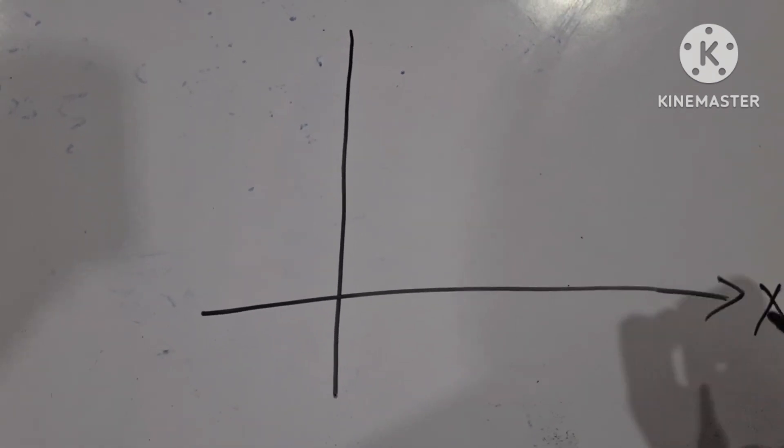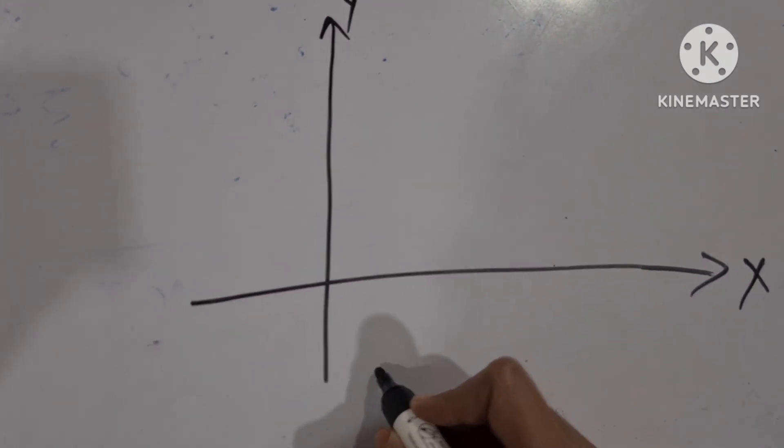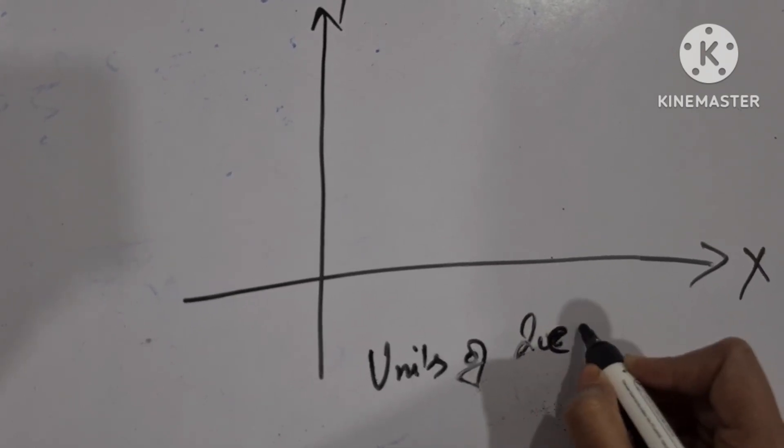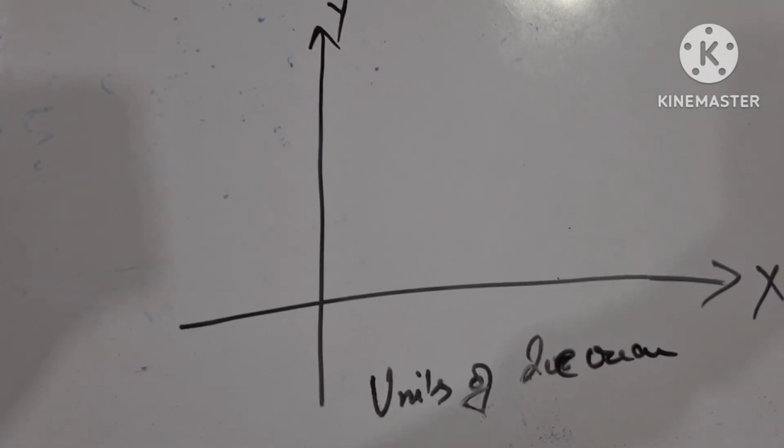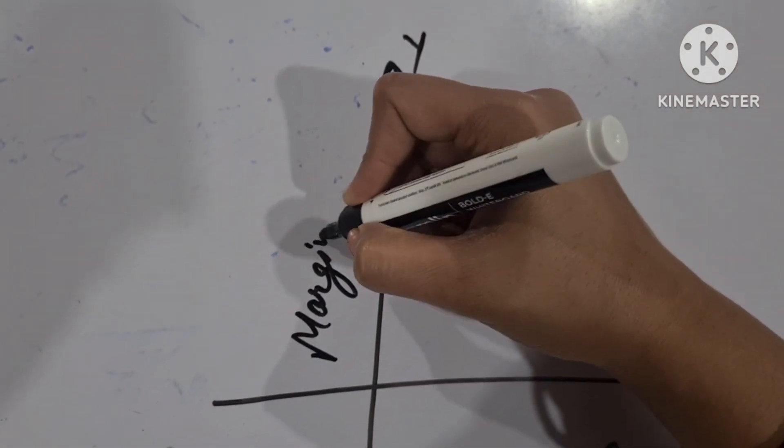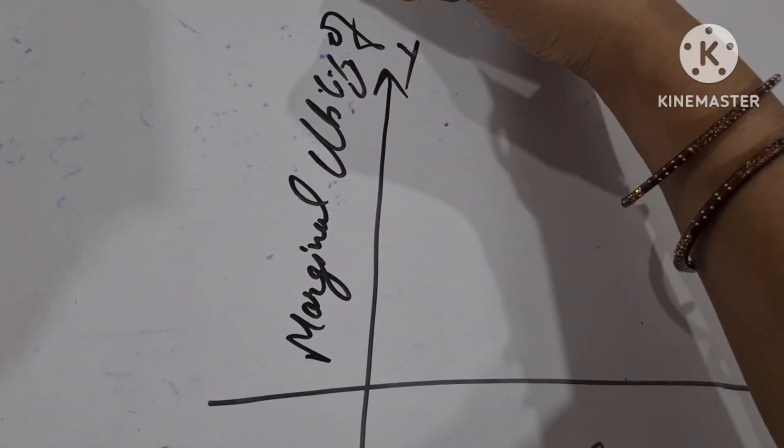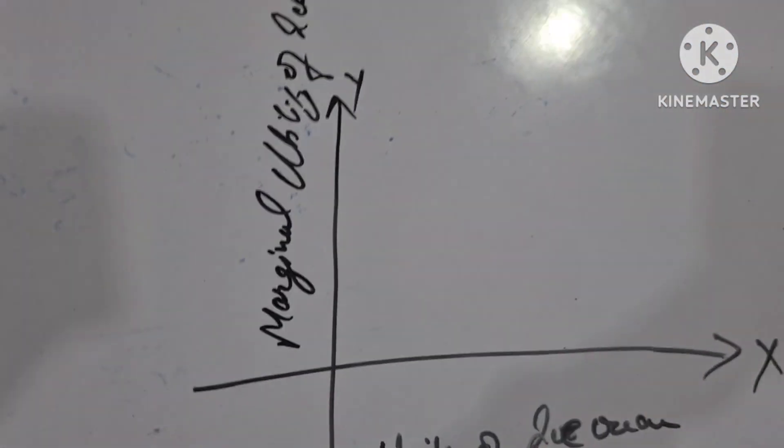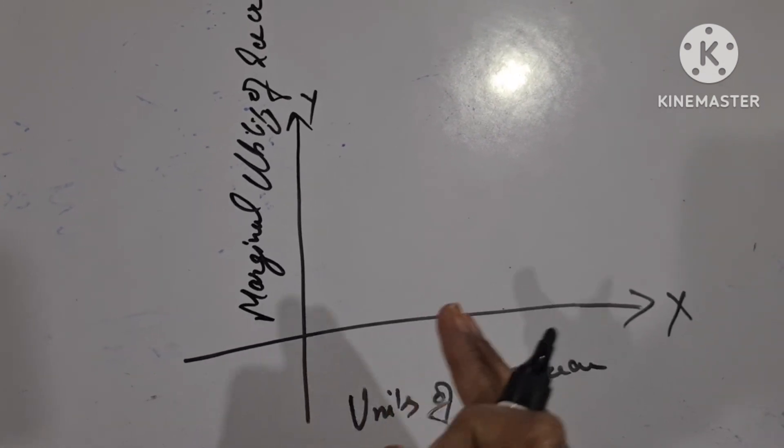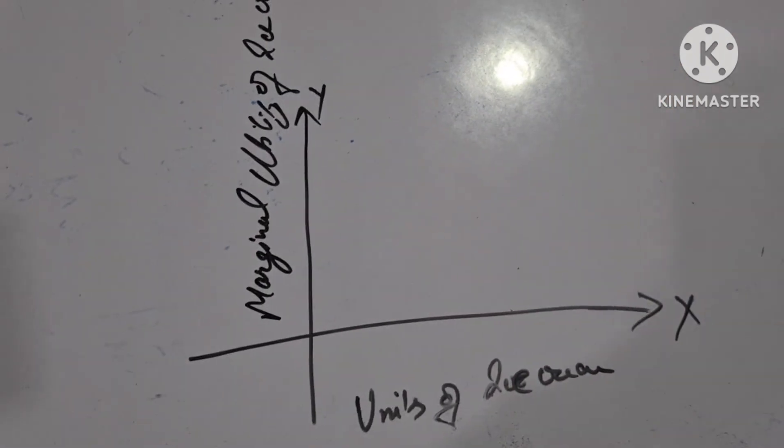This is the x-axis. This is the y-axis. Here on the x-axis, we will write units of ice cream. We will measure the units of ice cream. And in the y-axis, we will measure marginal utility of ice cream. So, what does the law state? It states that as we consume more and more units of ice cream, the marginal utility goes on decreasing.